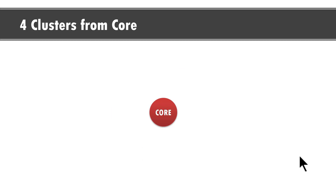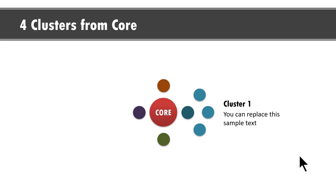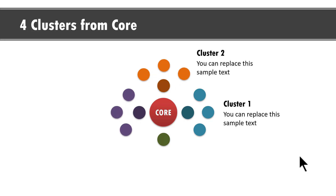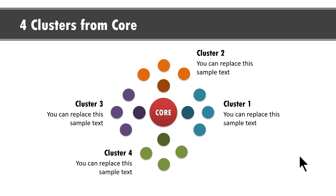Let me show you how. You start your story by saying: we started our business with a core proposition. Over the years, we expanded to offer four allied services. As the business grew even further, each of those allied services developed their own cluster of services like this. Can you see there are multiple ways in which you can use this cluster diagram? I'll show you how to create this beautiful diagram from scratch.